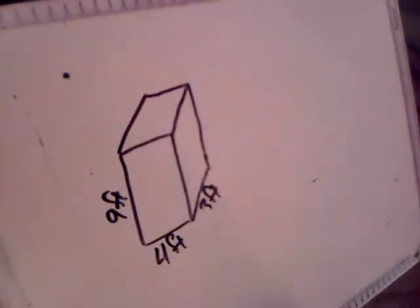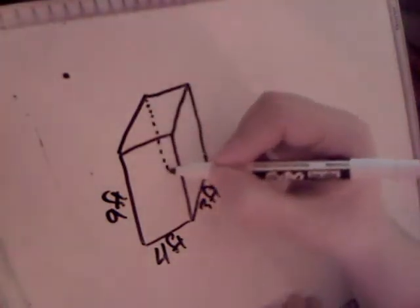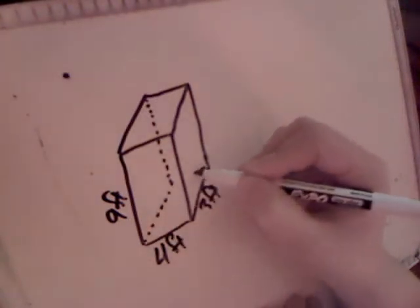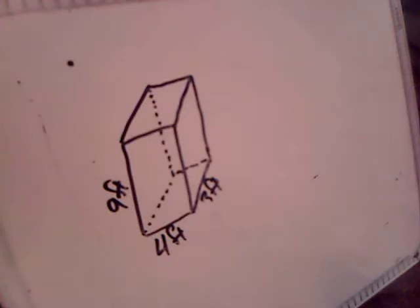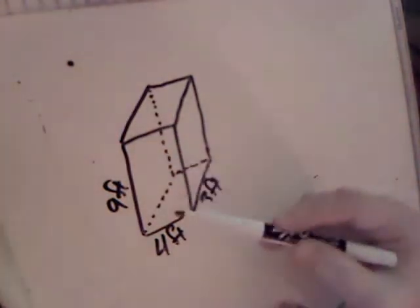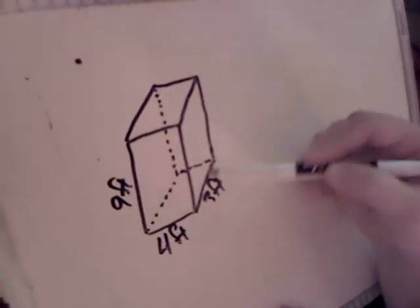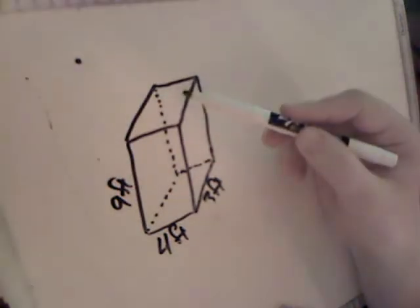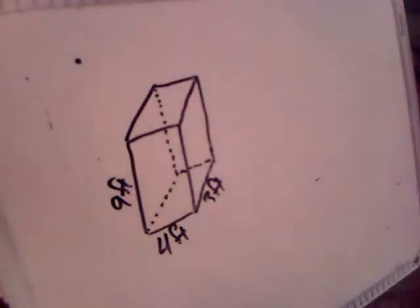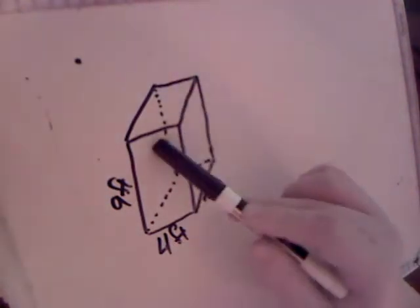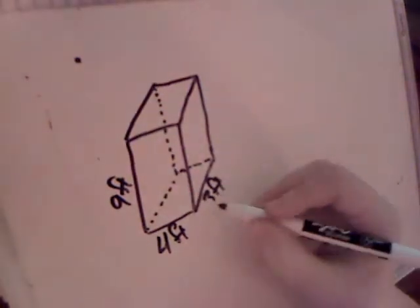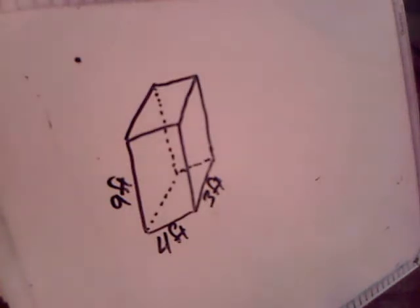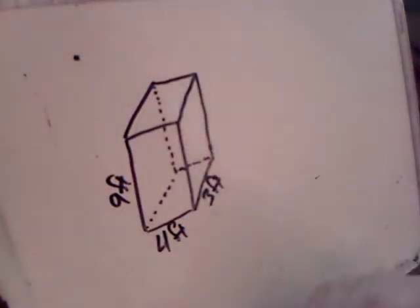To find surface area, you need to find the area of all of the sides on this figure. In this case you need to find six areas: the front, the back, the side, the other side, the top, and the bottom. The important thing to remember is to get the hidden sides — the back, the back side, and the bottom that you normally can't see. In this particular shape, the front and the back are exactly the same measurements, the top and the bottom are exactly the same, and the sides are exactly the same.